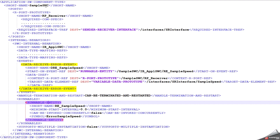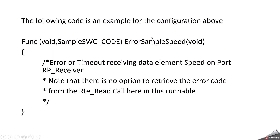In the configuration example, I have an application software component with a data receive error event, an R-port, and a runnable entity. The associated C function is called 'error_sample_speed' and gets triggered whenever there is an alive timeout failure or the COM signal is invalidated. The implicit read error code can be obtained via the Rte_IStatus API, and the explicit read returns the error code from the Rte_Read API. Note that there is no option to retrieve the error code from the Rte_Read call within this runnable.